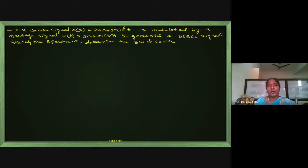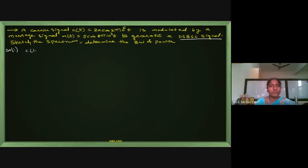The carrier signal c(t) is 20cos(2π×10⁶t), modulated by a message signal m(t) = 5cos(8π×10³t) to generate a DSB-SC signal. We need to sketch the spectrum, determine the bandwidth and power. Comparing c(t) with the general format Ac·cos(2π·fc·t), we get Ac = 20 and fc = 10⁶ Hz.